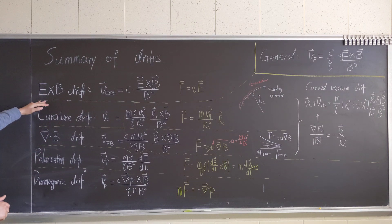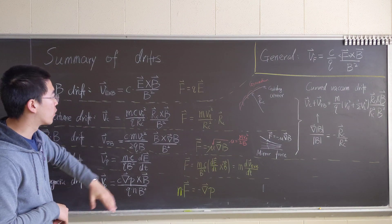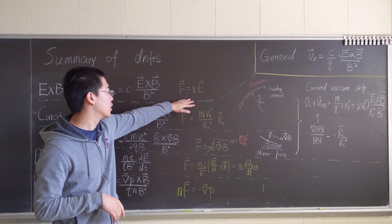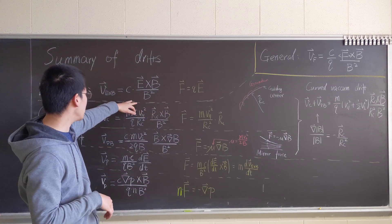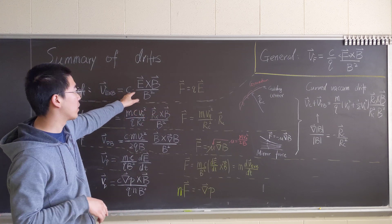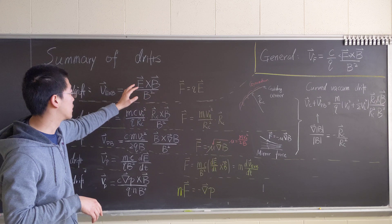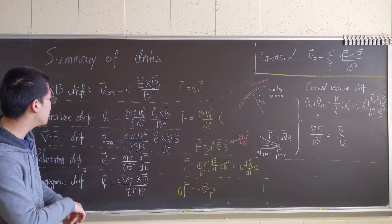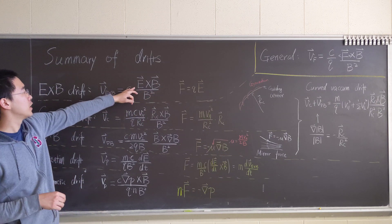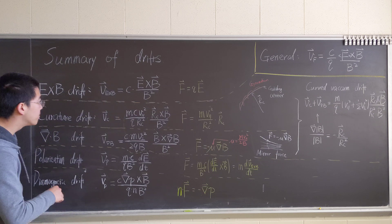First and foremost, the E cross B drift will have the electric field — the force will be q dot E. Then applied to the general formula, we will have v_{E×B} equal to c times E cross B over B squared.